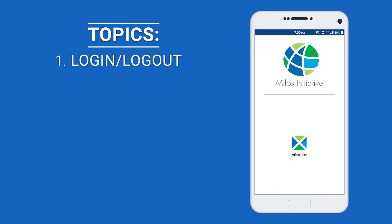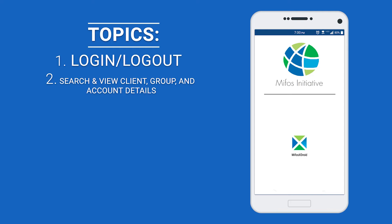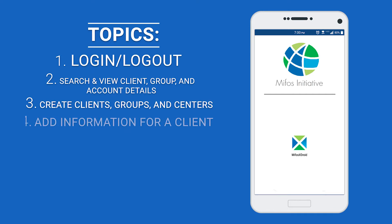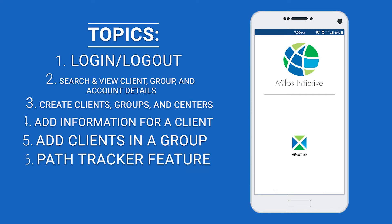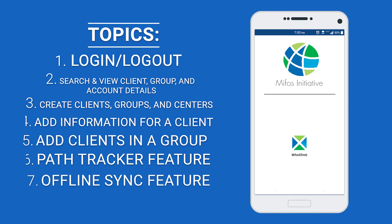The first topic is how to log in and out of the application. The second topic is how to search and view client, group, and account details. The third topic is how to create clients, groups, and centers. The fourth topic is how to add information for a particular client, such as charges, savings accounts, loan accounts, etc. The fifth topic is how to add clients in a group. The sixth topic is how to use the path tracker feature. And the last topic is how to use the offline sync feature.